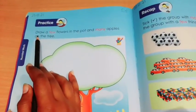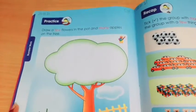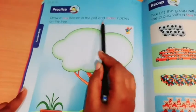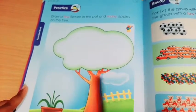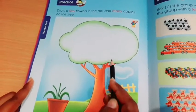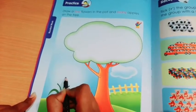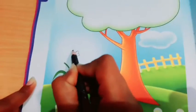Students, as you know, here we are going to do the practice. Draw few flowers in the pot. This is a pot, we have to draw few flowers, and many apples on the tree. This is a tree, so we have to draw many apples on the tree. I will show you how, please look here. So here we are going to make flowers over it.